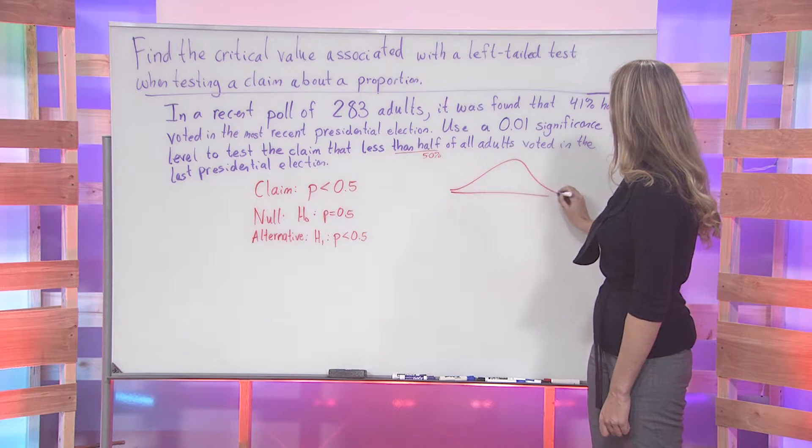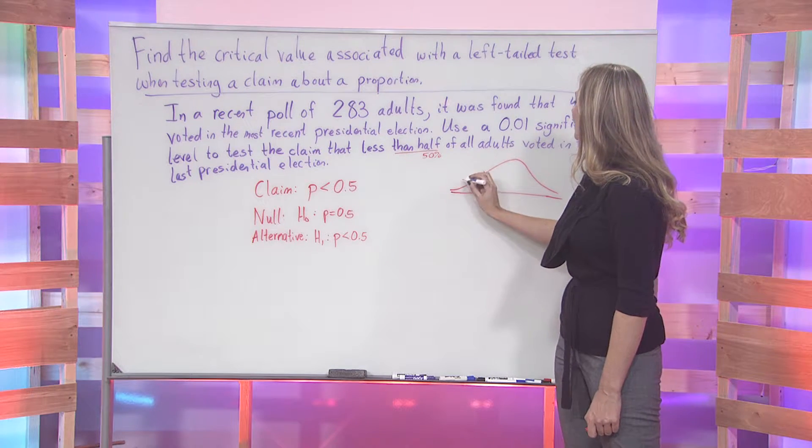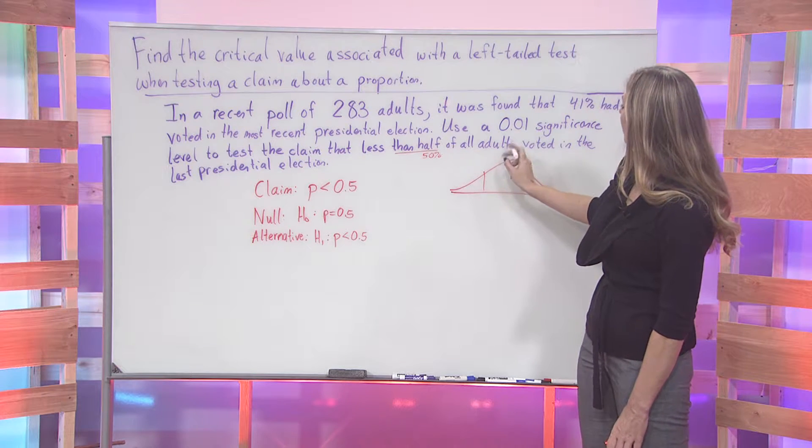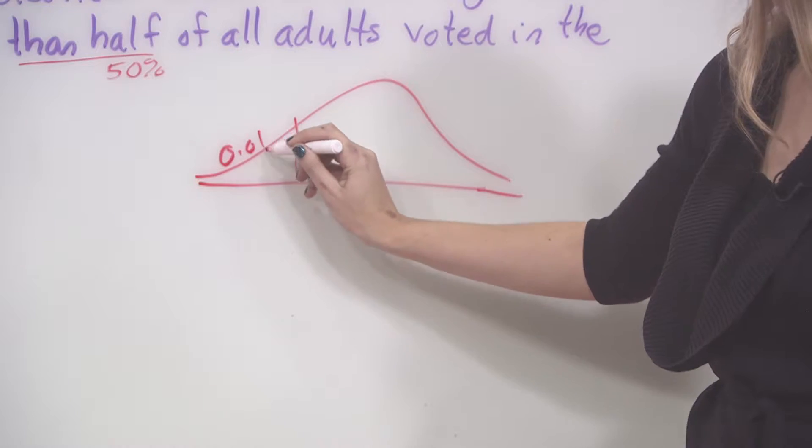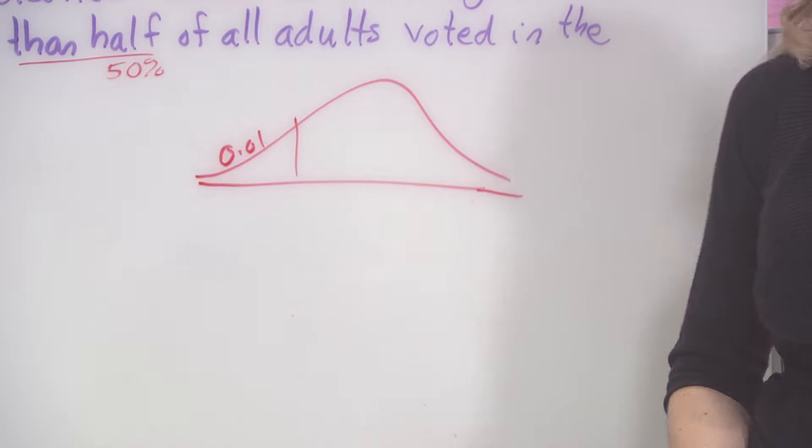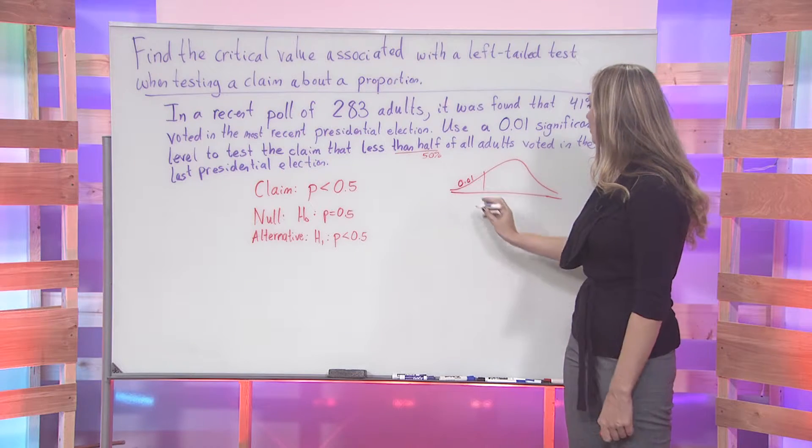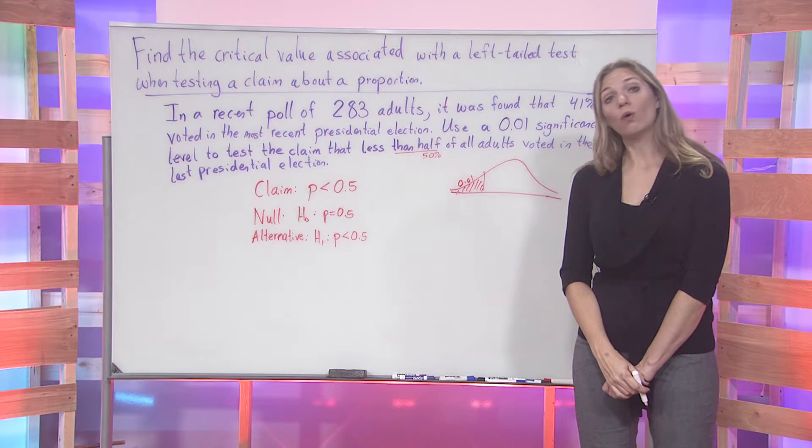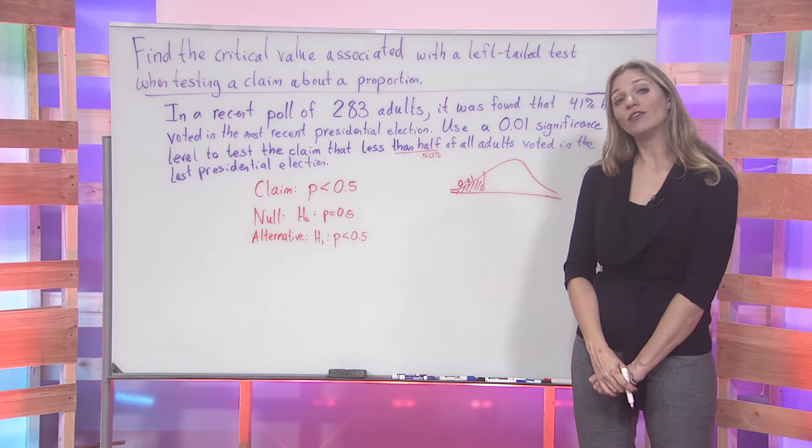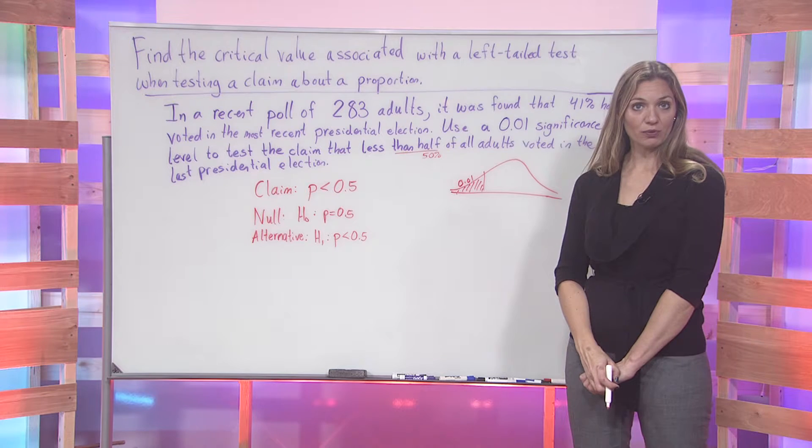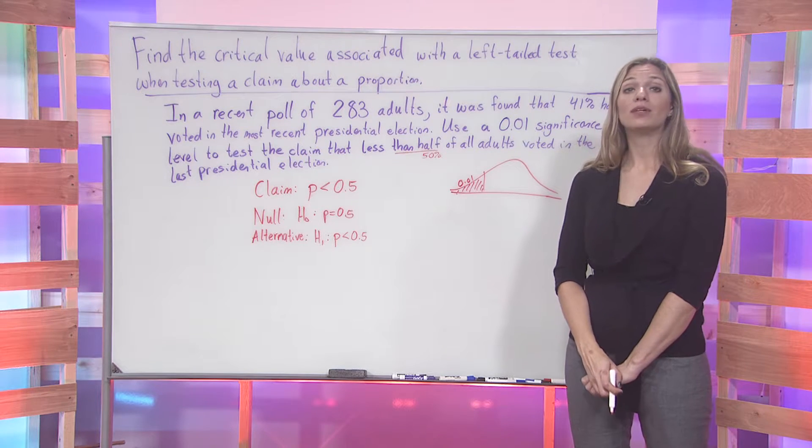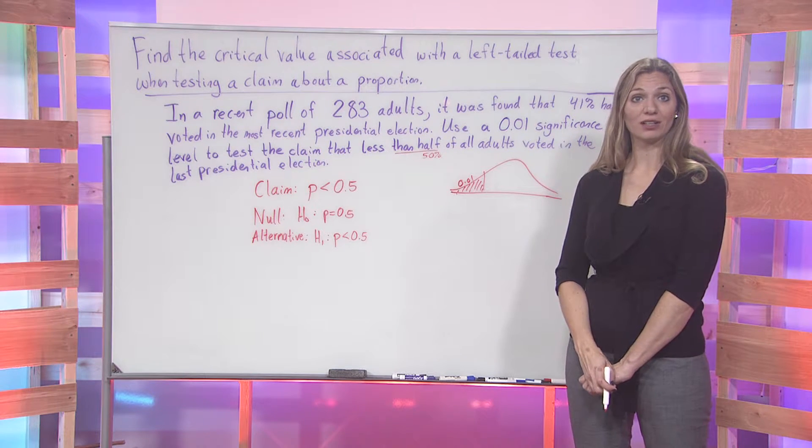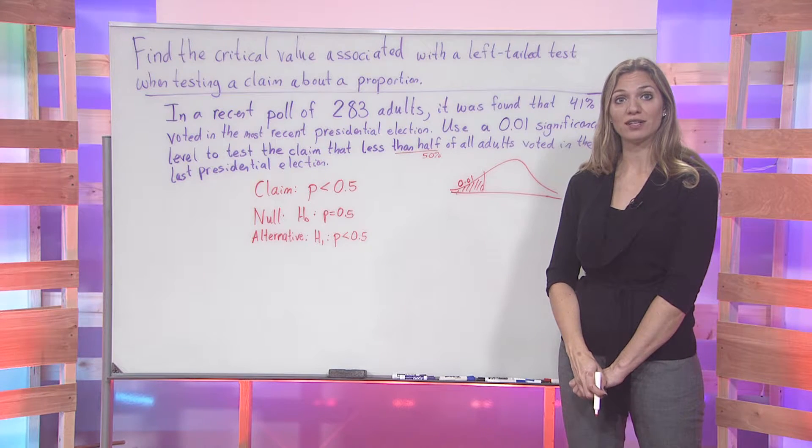We want to find the area under a curve of 0.01, the z-score that's associated with that. We are going to go ahead and either use our chart, or we may use our calculator to help us. If you use your calculator, a TI-83 or 84 graphing model, please refer to the posted graphing calculator videos to aid you in this process.